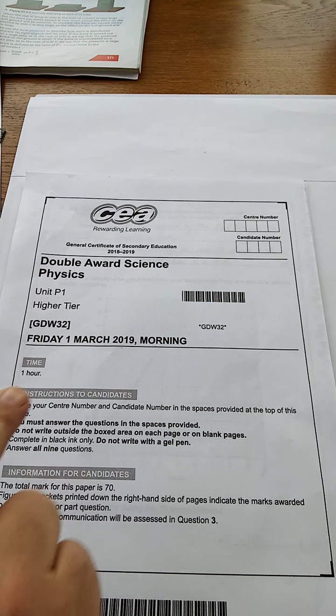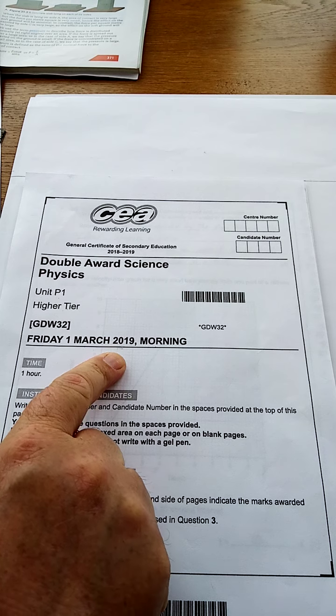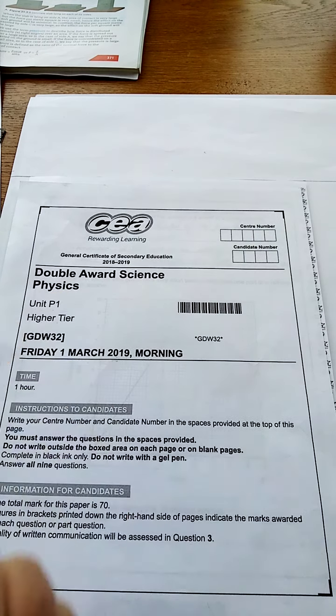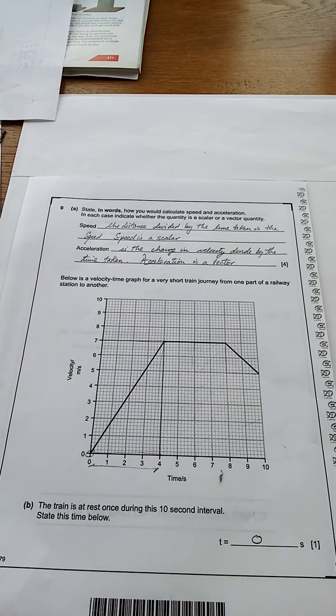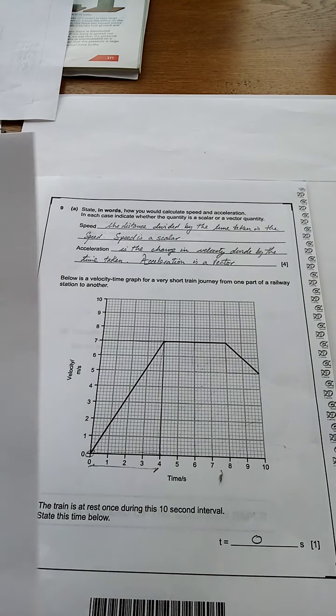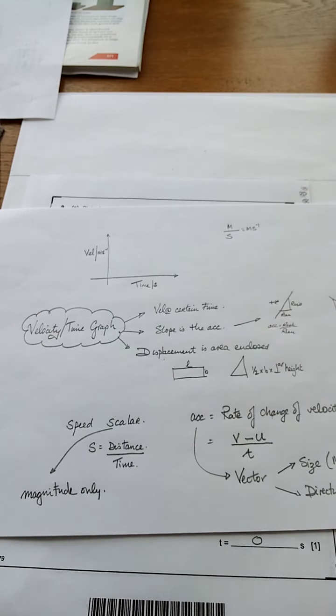I'm going to look at the last question, March 2019, double award science, physics, higher tier. It's question number 9. I have bits and pieces of this one done just to see if we can make it different. And here's the mind map that we need to know for this one.